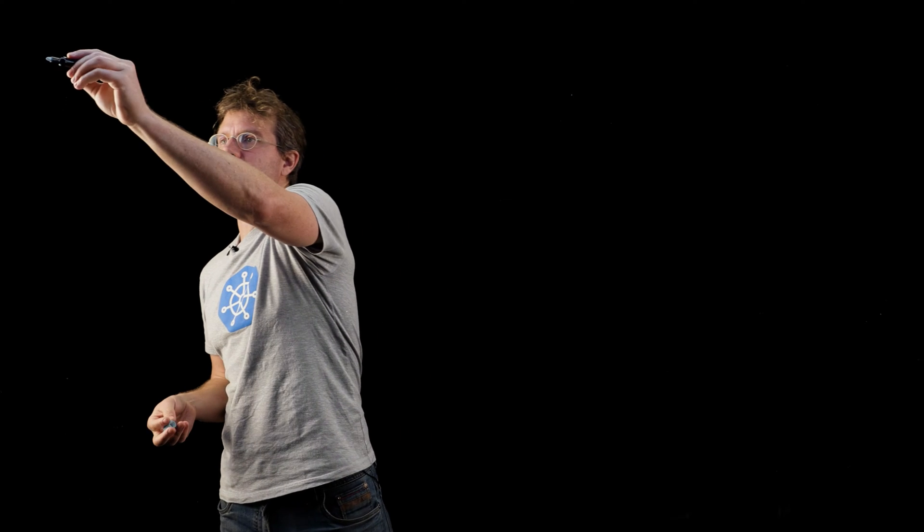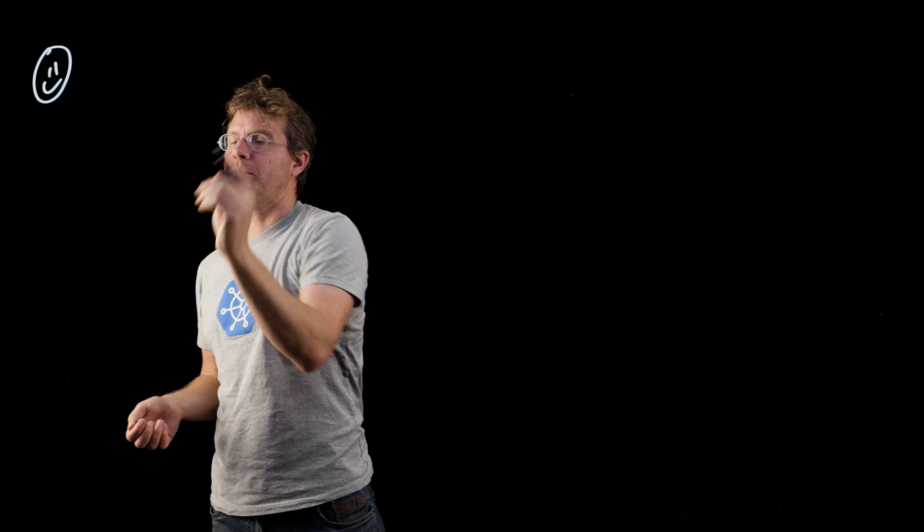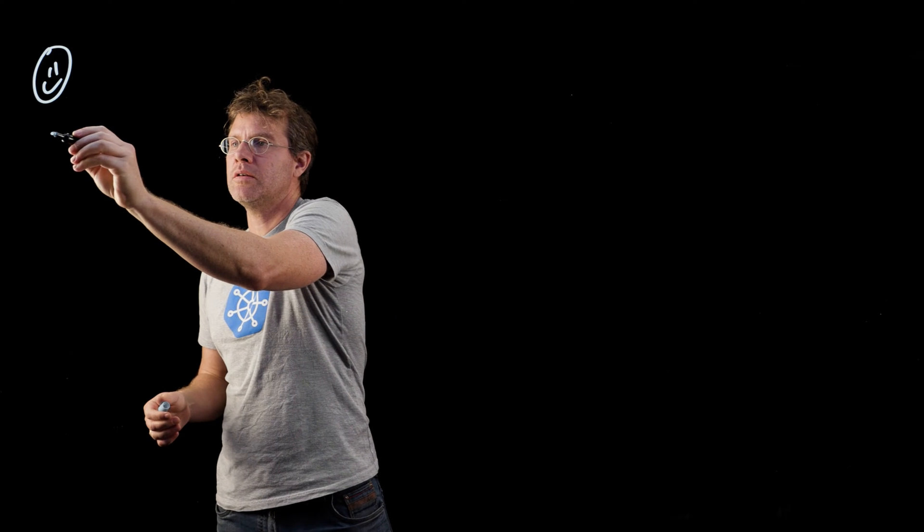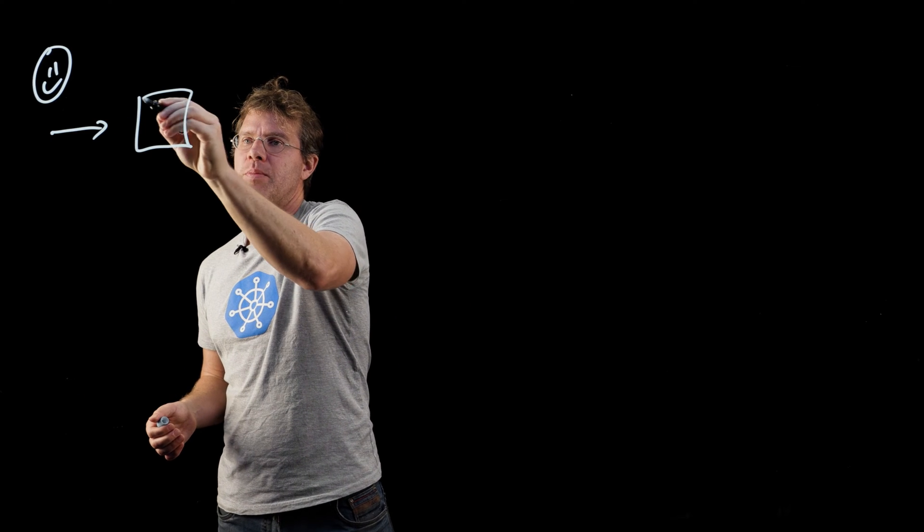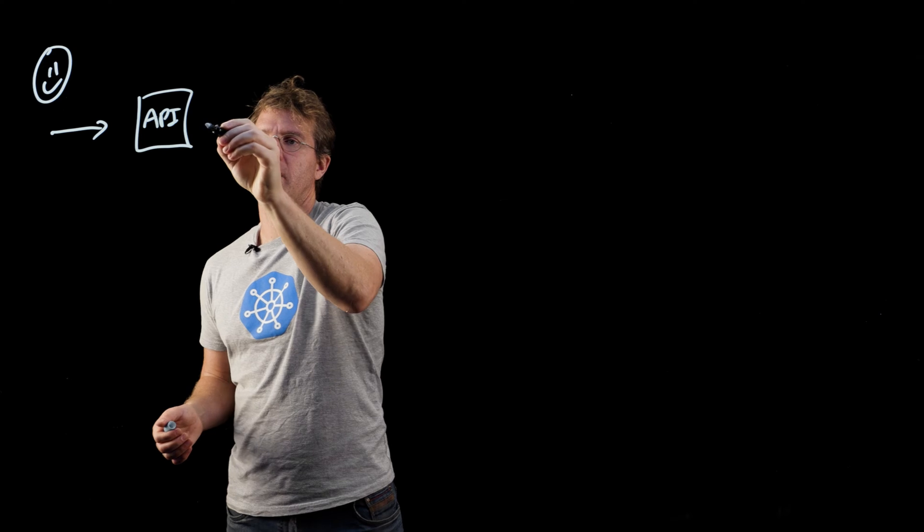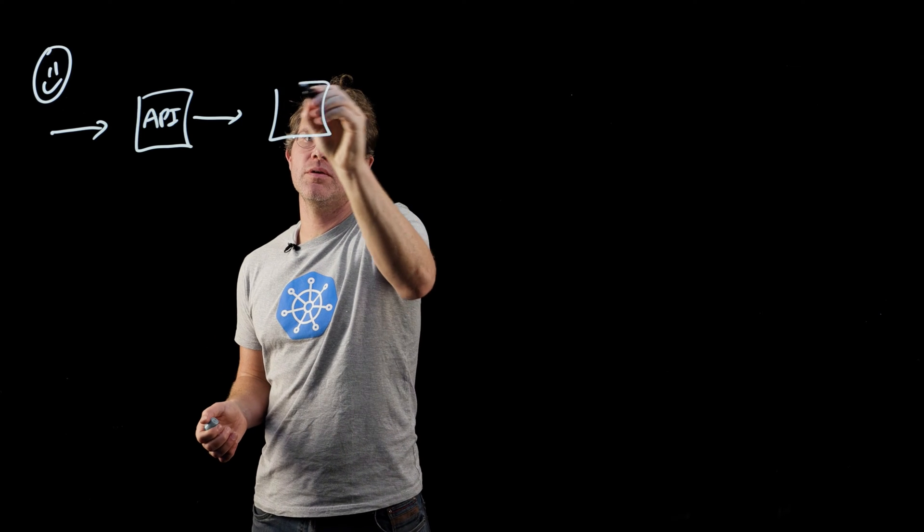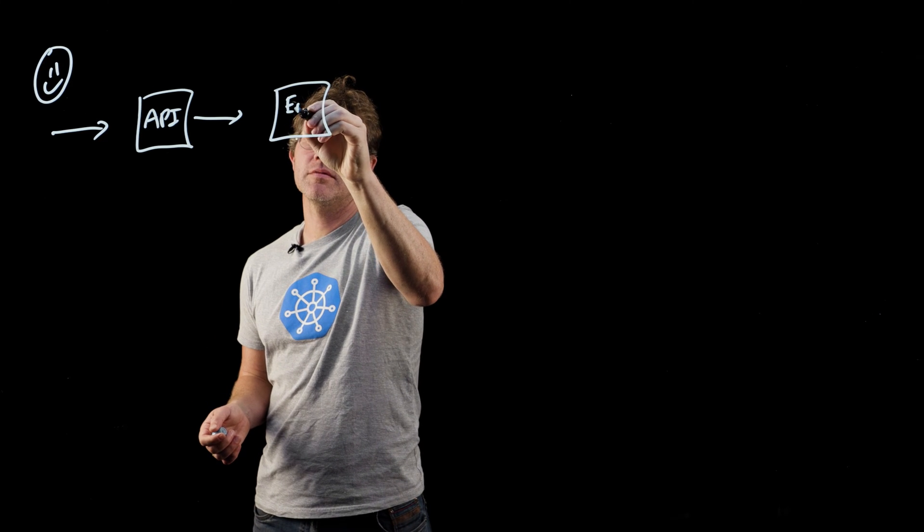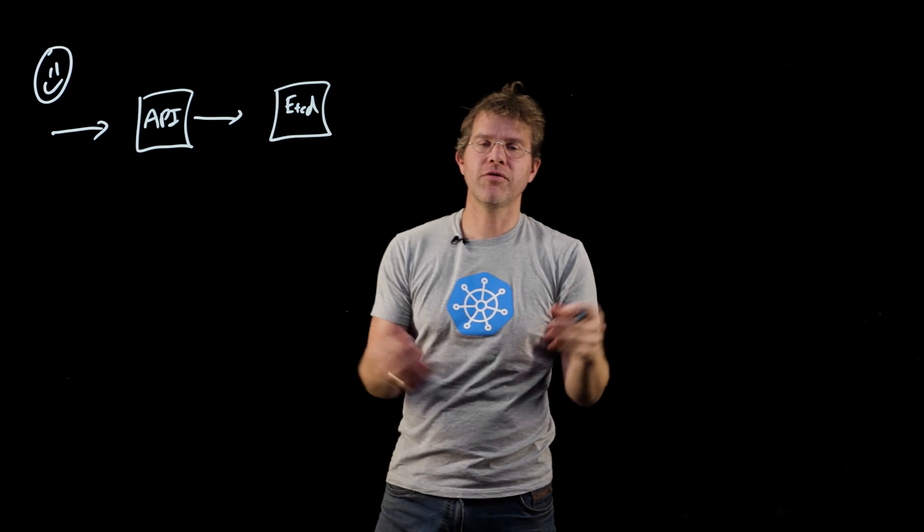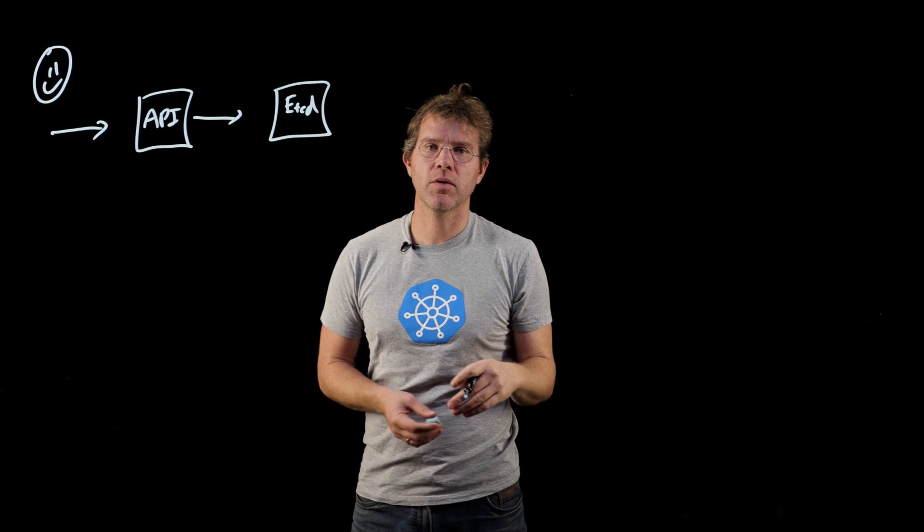I want to start by just diagramming out what a request looks like when it comes into Kubernetes. There's basically three parts. There's obviously the person or potentially automation that is making the API call. That goes to the API server, and that eventually goes to the etcd database. That's the basic flow of all API requests.